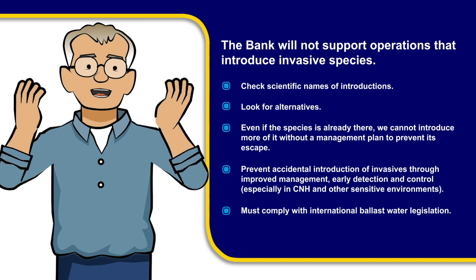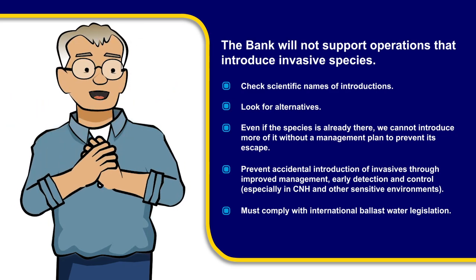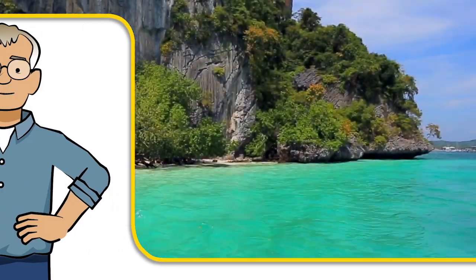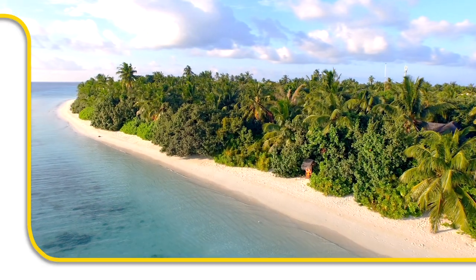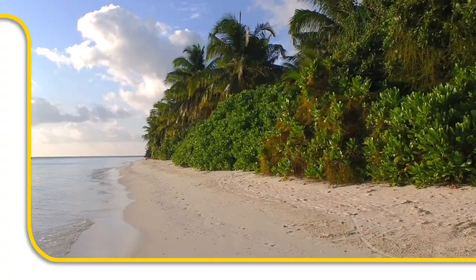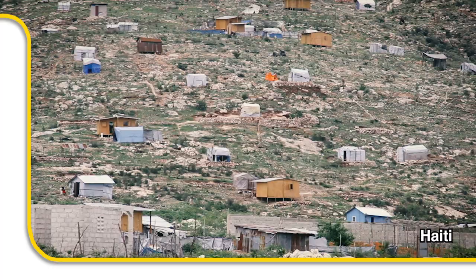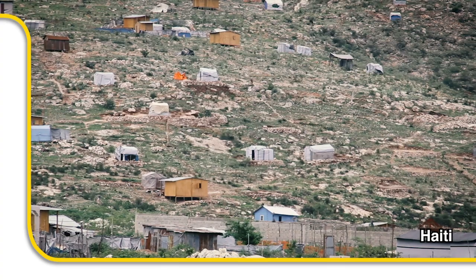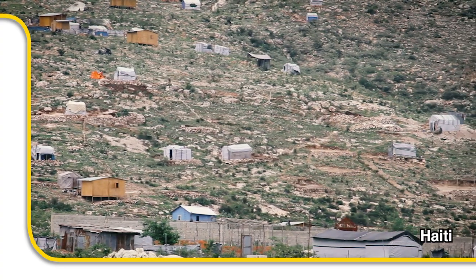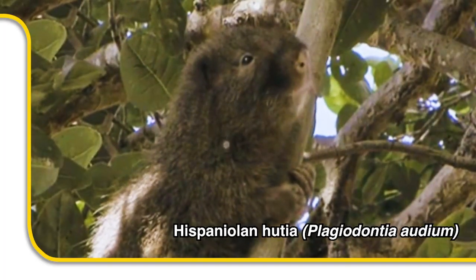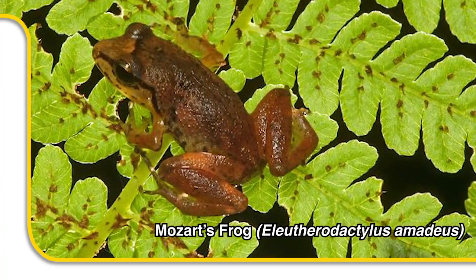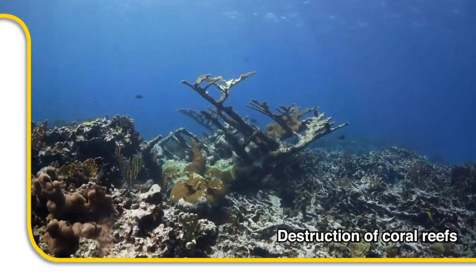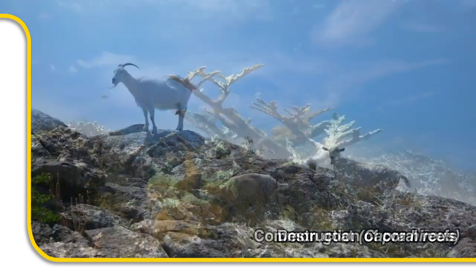Comply with international ballast water legislation and any other national legislation that controls the use of invasives. Islands are particularly vulnerable to invasive species. Biodiversity and environmental issues are sometimes not adequately considered in projects in Haiti because of the high level of degradation the island has already experienced. However, Haiti is a biodiversity hotspot with a suite of endemic species and has suffered not only from forest clearance and destruction of coral reefs, but also from the introduction of invasive species.